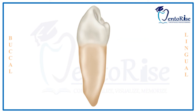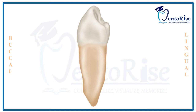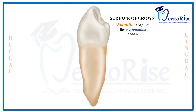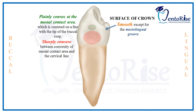Tracing the path of the buccal triangular ridge and the lingual triangular ridge: the sulcus formed by the buccal triangular ridge — marked in green — and the lingual triangular ridge — marked in blue — is directly above the mesolingual groove on the mesial aspect. The surface of the crown from this aspect is smooth except for the mesolingual groove. The mesial contact area is palatally convex and is centered on a line with the tip of the buccal cusp. Below the mesial contact area and above the cervical line, the surface is sharply concave as marked in red in the figure.